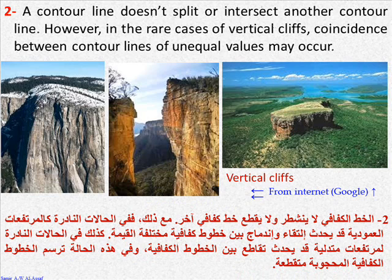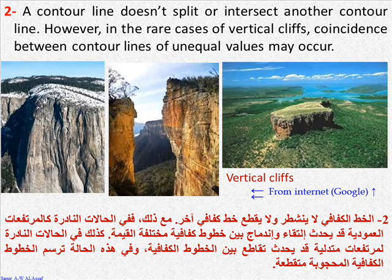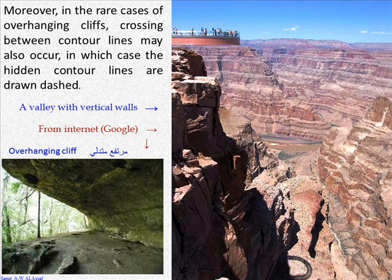Rule 2: a contour line does not split or intersect another contour line. However, in the rare cases of vertical cliffs, coincidence between contour lines of unequal values may occur. Moreover, in the rare cases of overhanging cliffs, crossing between contour lines may also occur, in which case the hidden contour lines are drawn dashed.